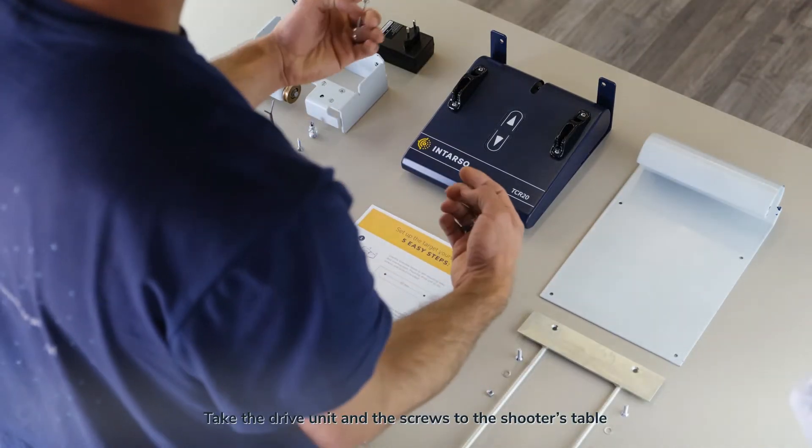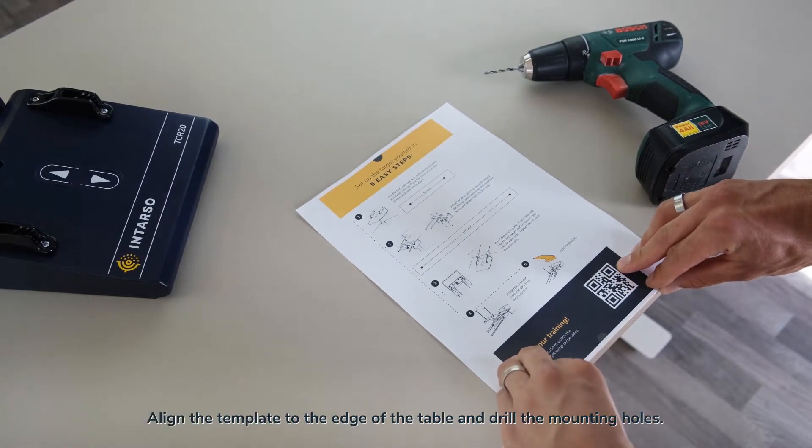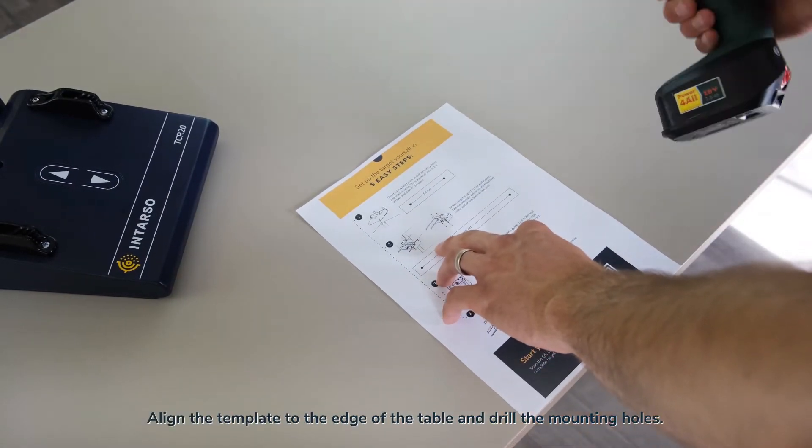Take the drive unit and the screws to the shooter's table where you would like to install the device. Align the template to the edge of the table and drill the mounting holes.